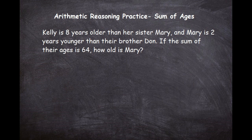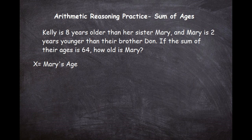Let's see where the common thread is between the three parts of this question. We have Kelly related to Mary in the first part, and Mary related to Don in the second part. What stands out is that Mary is the common link — we can use Mary as the variable because we can get to the other characters from Mary. So we'll set x equal to Mary's age. We chose Mary because she has a direct connection to both Kelly and Don, so we can express both Kelly and Don in terms of x.